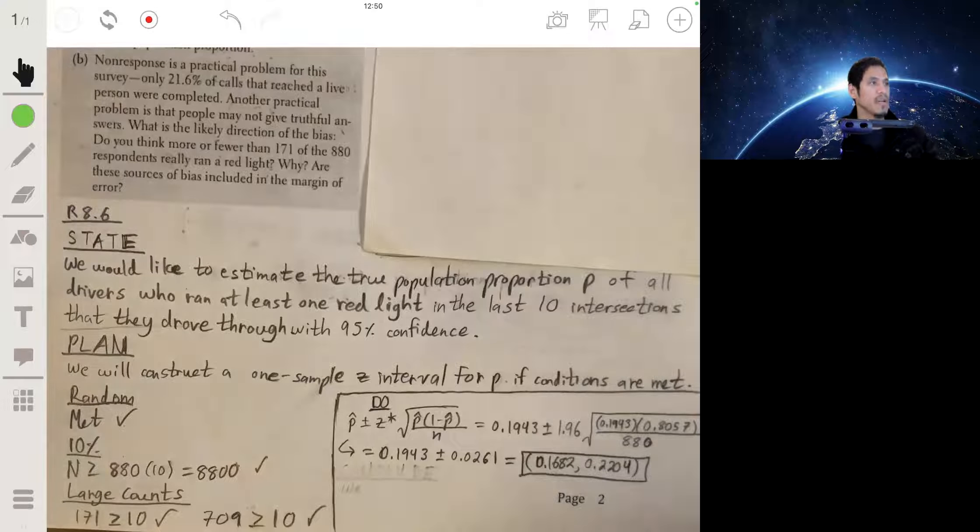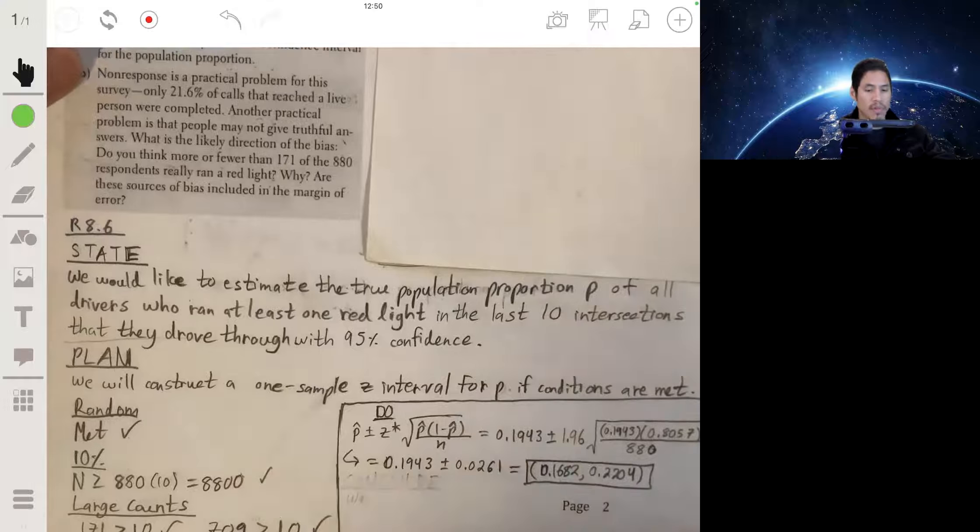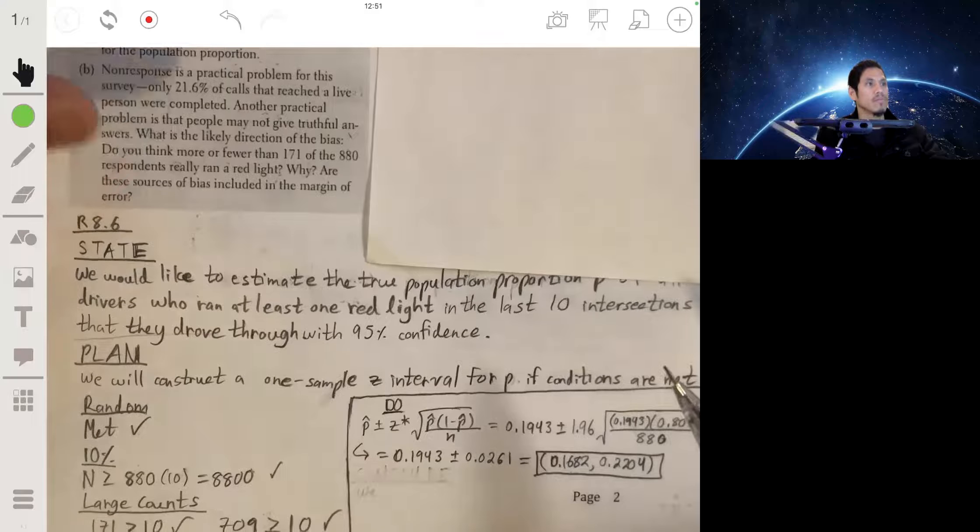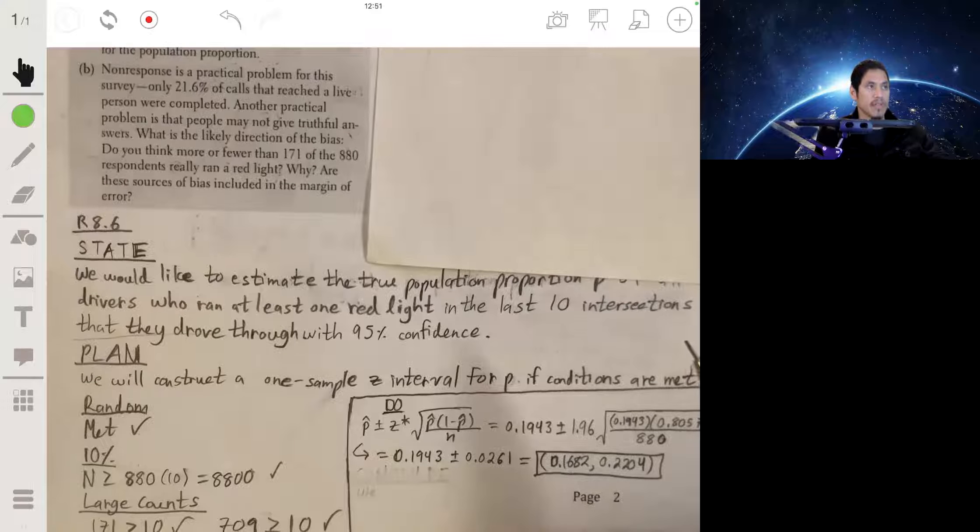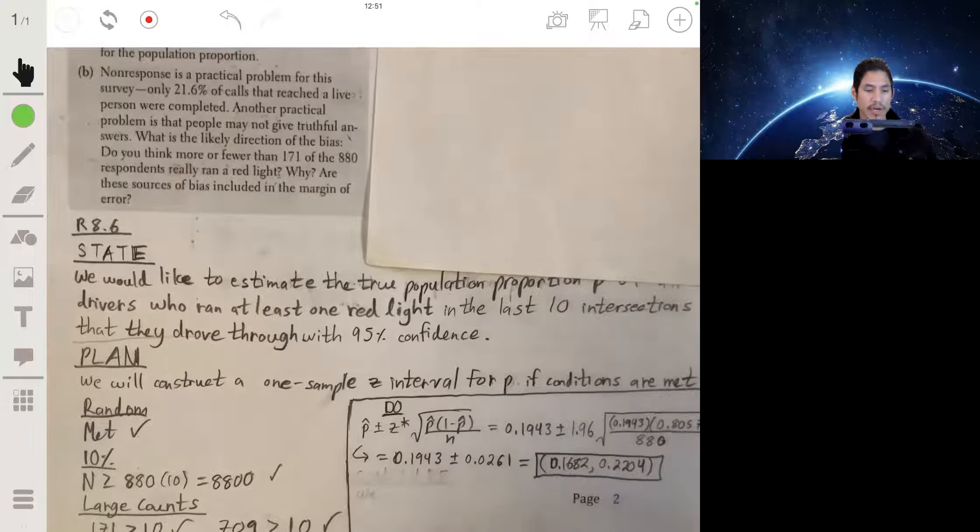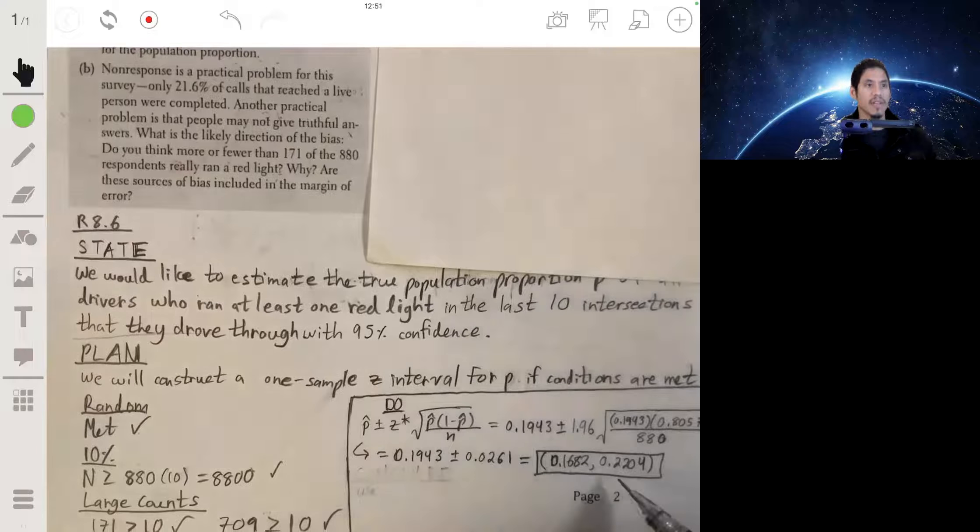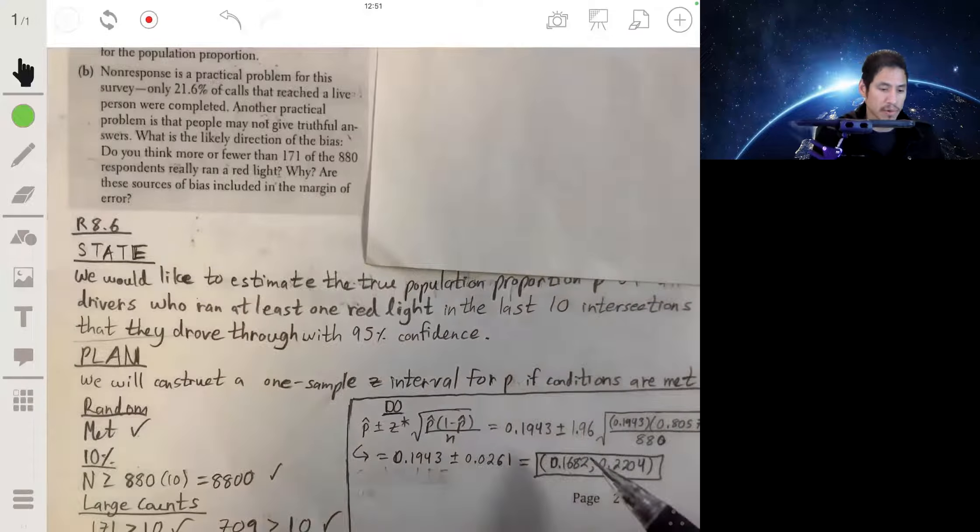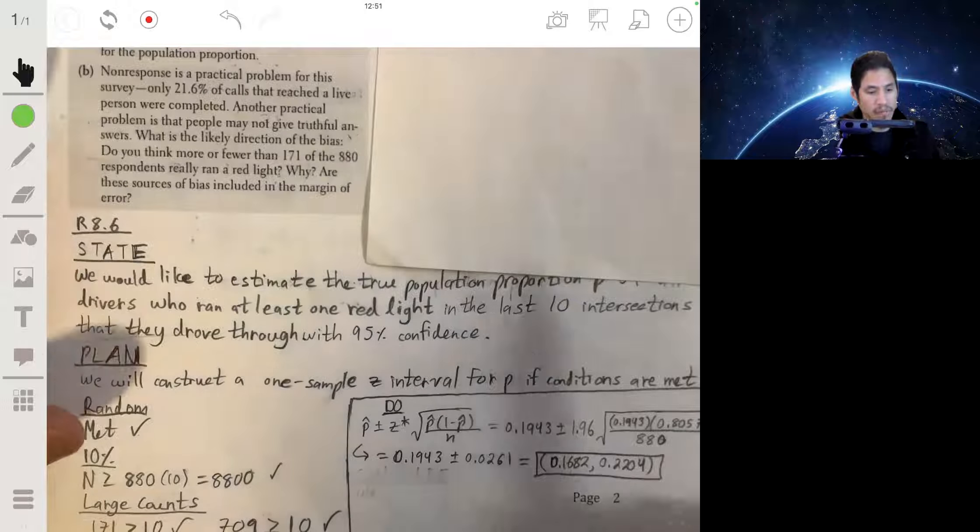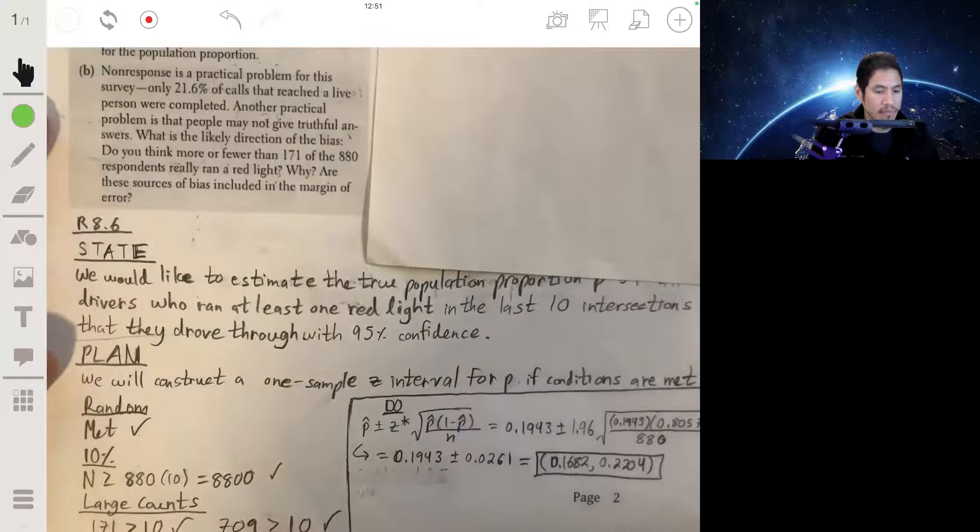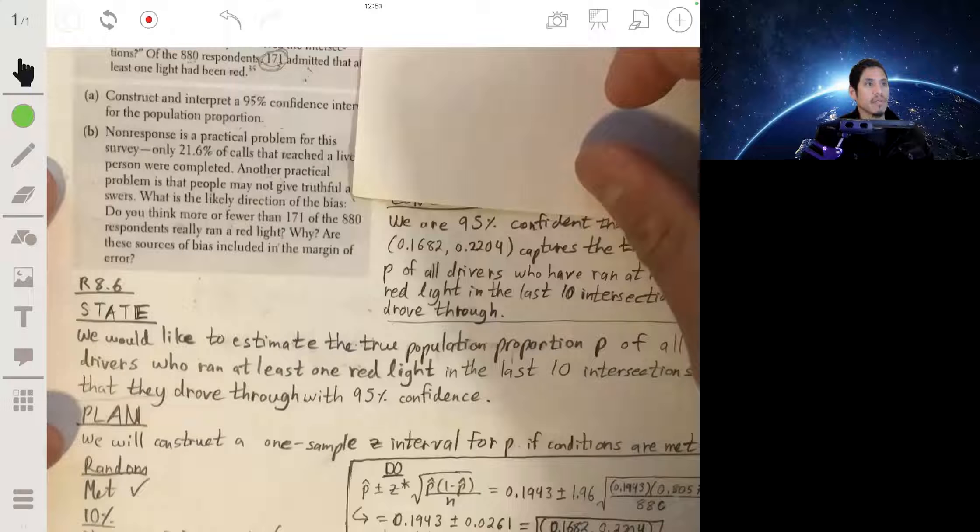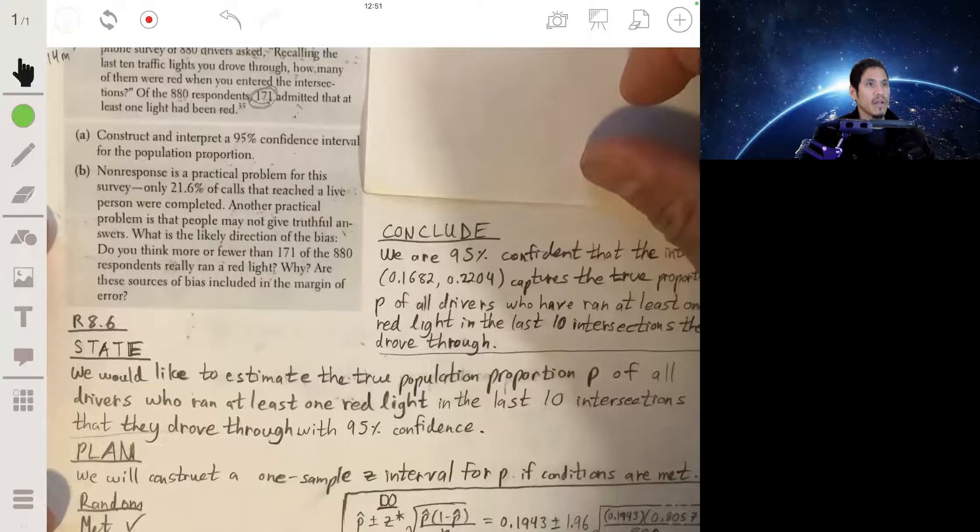Okay, and now we just conclude the problem: write what we figured out in context. So we can essentially say that we are 95% confident that this interval captures the true population proportion p of drivers that have ran at least one red light in the last 10 times that they've gone through an intersection. And there it is.